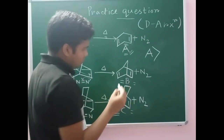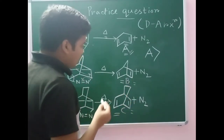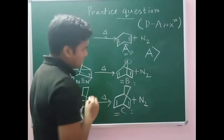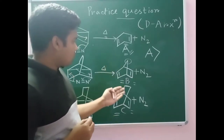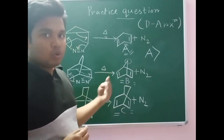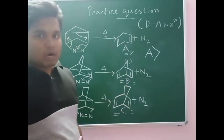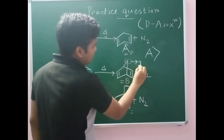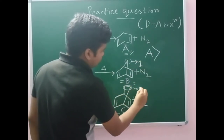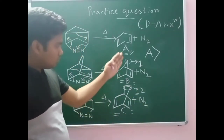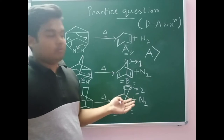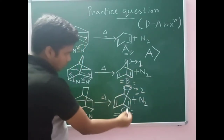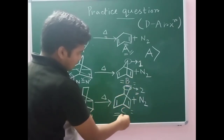Now I have two bridged bicyclic compounds left. In the case of bridged bicyclic compounds, when the number of methylene carbons in the bridging position increases, the stability of the product is higher. Here in product B the bridging methylene group count is one, but in product C it is two. So between B and C, product C will be more stable because the number of methylene carbons is higher.